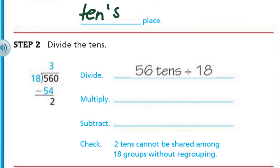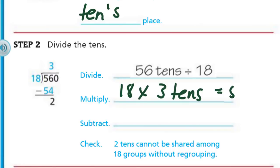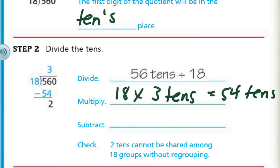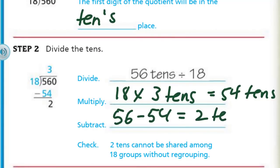Step 2: divide the tens. So we're going to take 56 tens. Remember, 500 couldn't be distributed evenly with the 18, so we needed to regroup and made our tens. That's why we have 56 tens divided by 18. Now we multiply — 18 times the 3 tens equals 54 tens. And then we subtract: 56 minus 54 equals 2 tens. Check — two tens cannot be shared among 18 groups without regrouping.